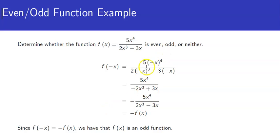we get 5 times the quantity negative x raised to the 4th all over 2 times negative x quantity cubed minus 3 times negative x.